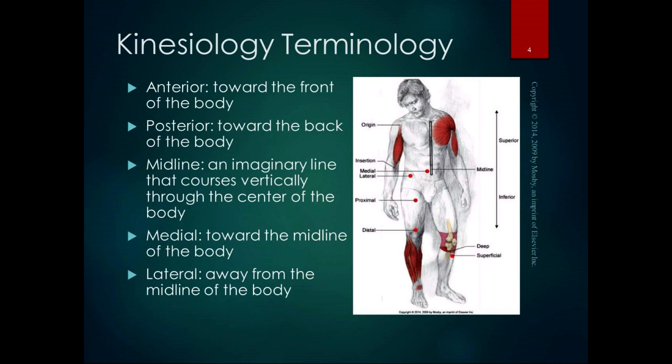Kinesiology terminology has pairs of words that go together meaning opposite things. The first example is anterior and posterior: anterior means toward the front of the body, and posterior means toward the back of the body. Usually we use these terms comparatively — for example, the tip of my nose is anterior to my throat because it's more toward the front of the body, or my C7 vertebra's spinous process is posterior to the tip of my nose because it's toward the back of the body.